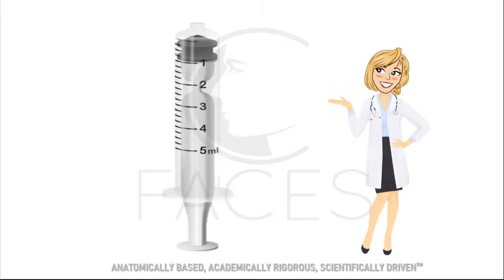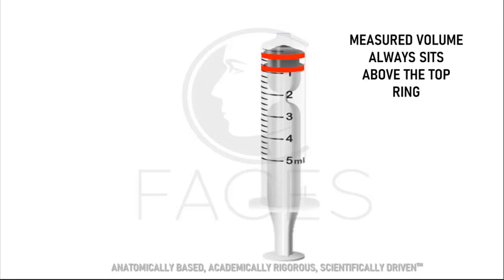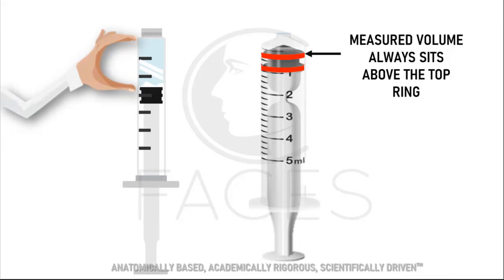You'll notice that the plunger seal or stopper has a bottom ring and a top ring. The top ring acts as an indicator for measuring the amount of medication within the syringe, meaning the measurable medication is always above the top ring of the stopper.